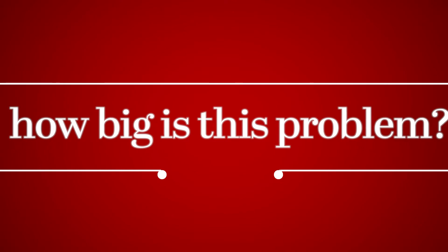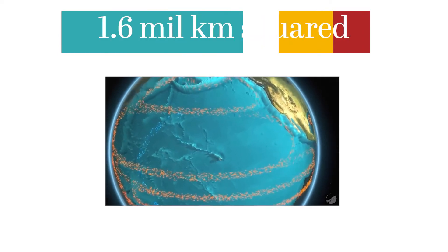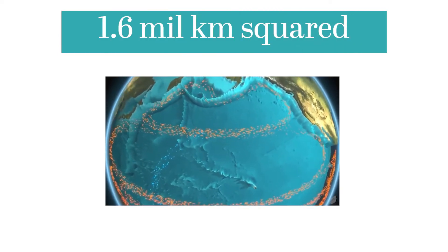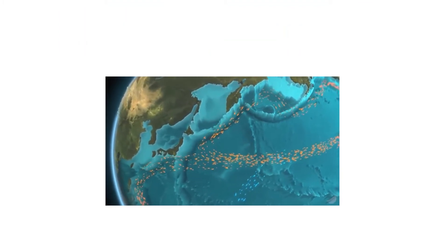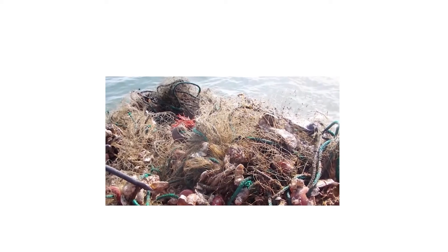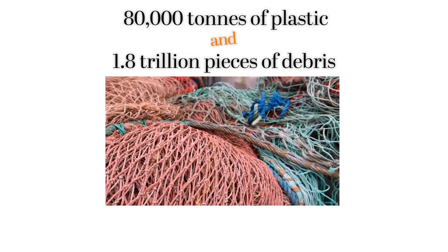So how big is this problem? Simply put, the Pacific patch alone is 1.6 million kilometers squared, which is three times as big as France or twice the size of Texas, and of course Texas is famous for being big. Estimates are extremely difficult, but the patch is assumed to contain roughly 80,000 tons of plastic and 1.8 trillion pieces of debris. That is 250 for every human being on earth.